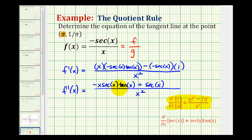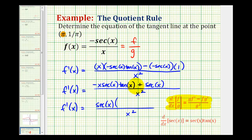So here we could factor out secant x. If we factor out secant x, here we'd be left with negative x tangent x, and here we'd have one. So I'm going to write one minus x tangent x. So now that we have our derivative function, we need to evaluate this at pi to determine the slope of this tangent line.